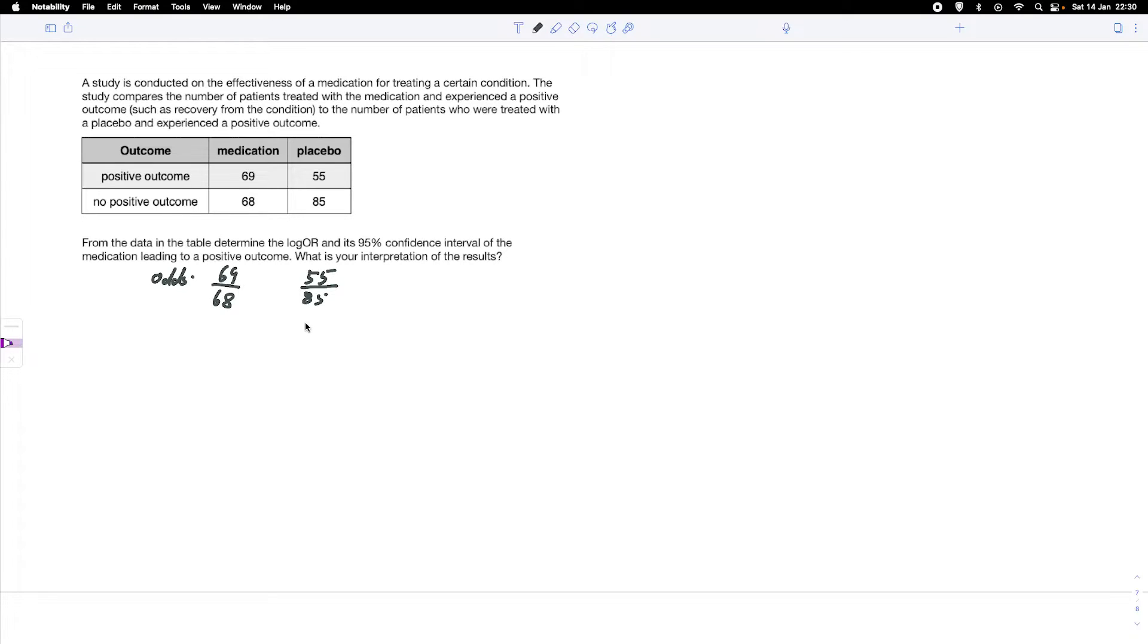We can also calculate that for the placebo group. That would be 55 over 85. We could calculate these odds, but we can also put them as an odds ratio. We just take 69 over 68 and put it into relation to the placebo group, divided by 55 over 85.